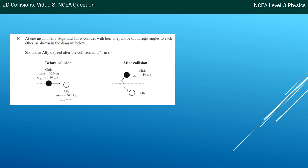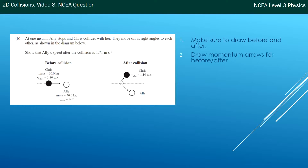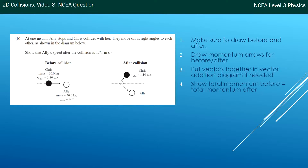The next question shows the collision — it must be showing from above. Ellie stops and Chris collides with her; they move off at right angles as shown in the diagram. Show that Ellie's speed after the collision is 1.71 metres per second. Here's the process I go through for two-dimensional collisions: make sure we have a before and after diagram, do the momentum arrows, put the vectors together in a vector addition diagram, and show that total momentum before equals after.